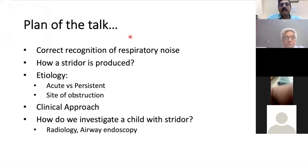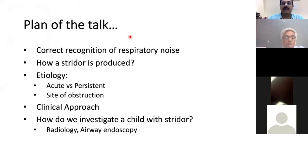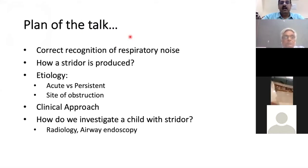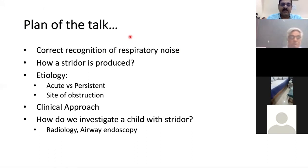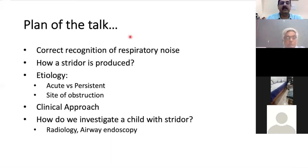We will talk about the correct recognition of the respiratory noise, because the algorithm actually starts once the respiratory noise has been correctly identified. We will discuss how stridor is produced, the etiology of acute versus persistent stridor, the site of obstruction, how to approach a child clinically, and how to investigate a child with stridor through radiology and airway endoscopy.